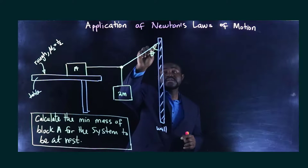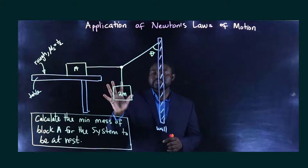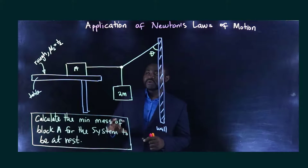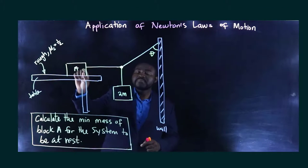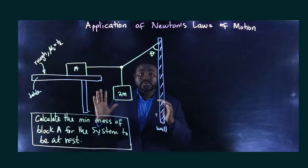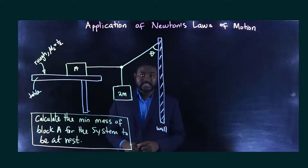This is an inelastic string keeping mass B together. So we need to calculate the minimum mass that A must possess in order for the system to remain at rest.